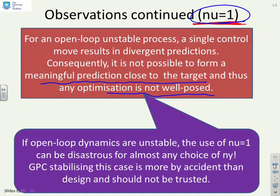If the open loop dynamics unstable, the use of nu equals 1 can be disastrous for almost any choice of ny. Changing ny really doesn't help. And if you do end up with a stabilizing control law, this is definitely by accident and not by design, and should not be trusted.